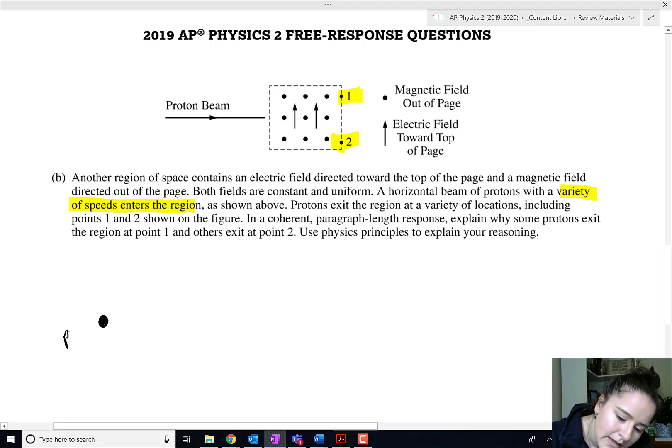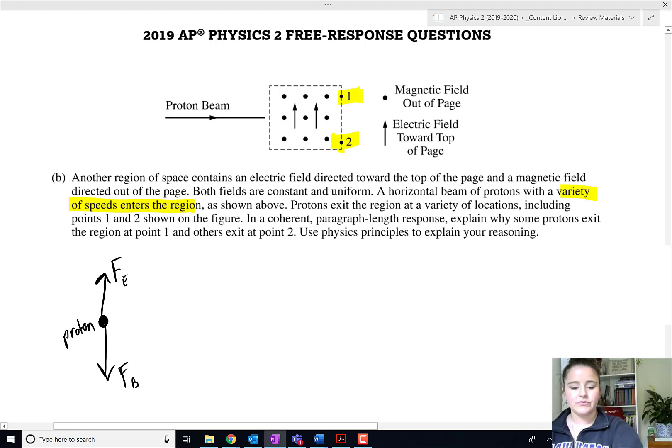While this is a paragraph length response, I do think a little diagram is going to help my explanation here, so I'm going to go ahead and include it. If we consider our proton in that field, the electric force is going to be directed upward and the magnetic force will be directed downward. That we know from how the fields are oriented.